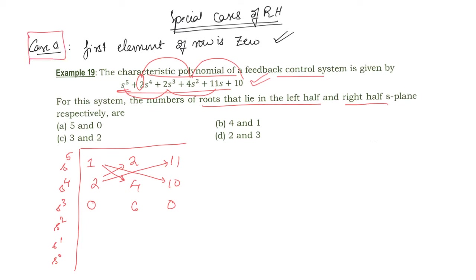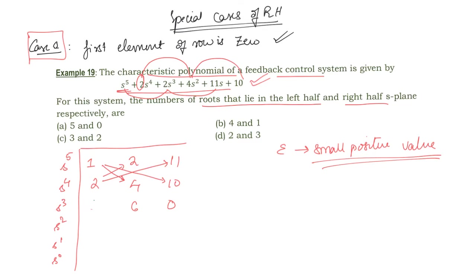In Case 1, we replace the zero by epsilon, which is a very small positive value. So instead of 0, we assume epsilon. The next element becomes (4ε − 12)/ε, and the following element is 10ε/ε, which equals 10.